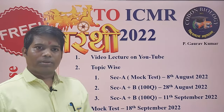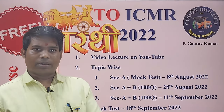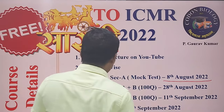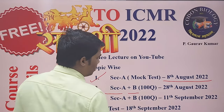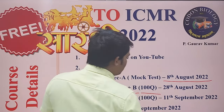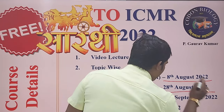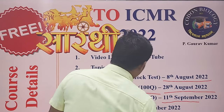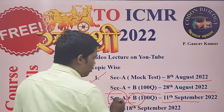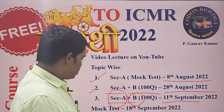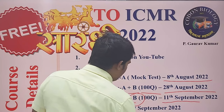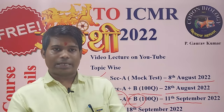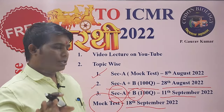Today I am going to discuss Update 4 of Batch Sarathy 2 ICMR. There are three tests in this batch. The first is Section A on 8th August, the second is Section A plus Section B consisting of 100 questions on 28th August, and the third exam will be on 11th September with questions from both sections. The last exam will be on 18th September, which will be a mock test same as the ICMR exam. The Section A first exam has already been completed.